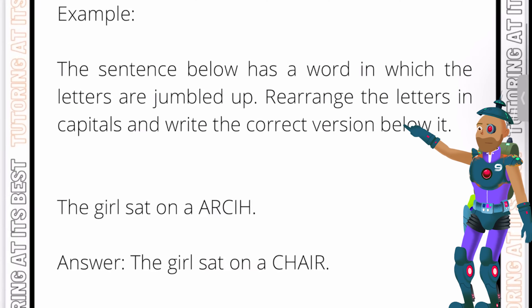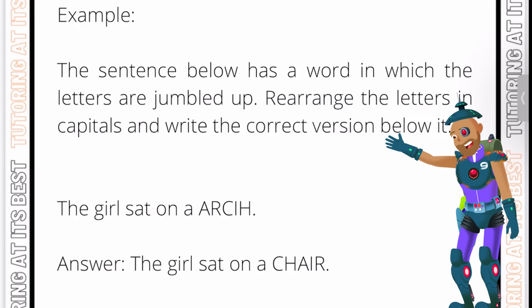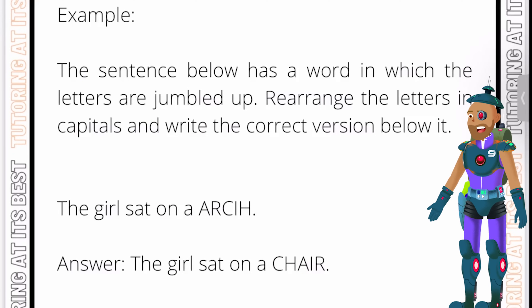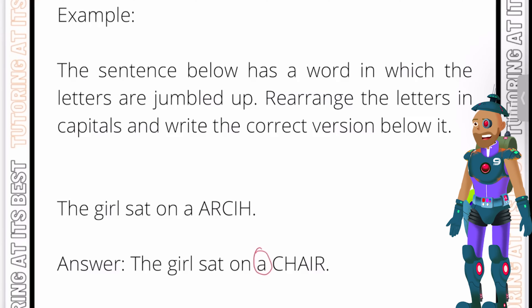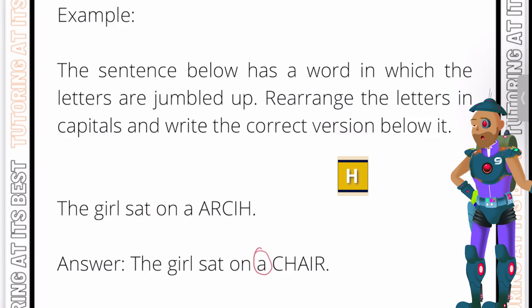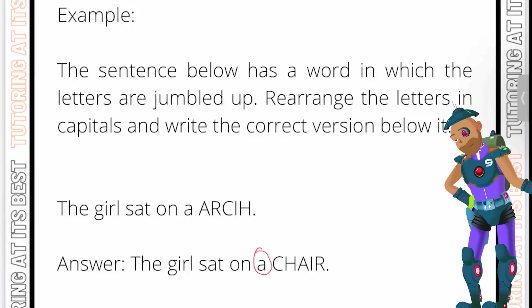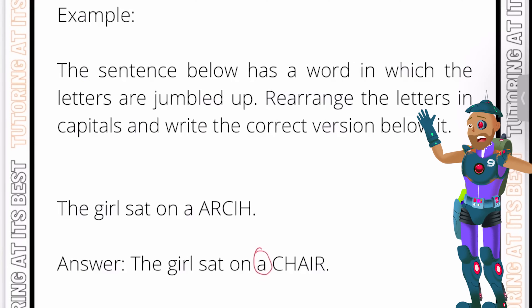The answer is: the girl sat on a chair. To reiterate, look at the common endings as well as the common beginnings. Also think about the fact that we have A at the beginning — because it starts with A, the answer must start with R, C, or H since A and I are vowels. So we would know she would have to sit on an object if the article before it were to begin with a vowel. I hope that was clear.